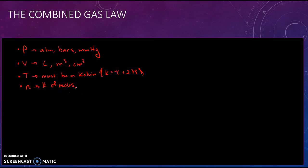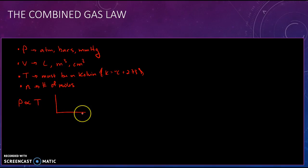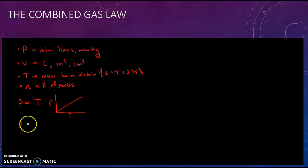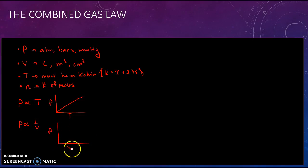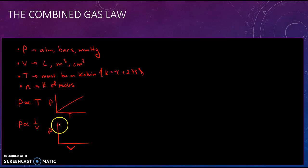So we have these four variables and they relate to each other. Pressure is directly proportional to temperature — if we plot pressure versus temperature, they go up together. Pressure is also inversely proportional to volume, so the higher the pressure, the lower the volume will be. If you plot pressure versus volume, at very low pressures you'd have high volumes, and at very high pressures you'd have low volumes.